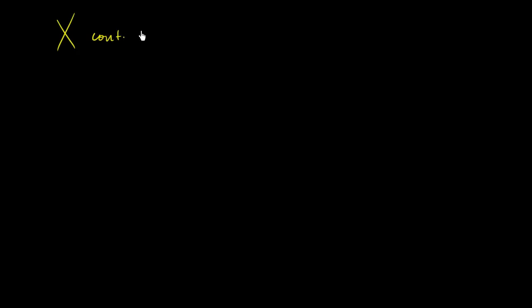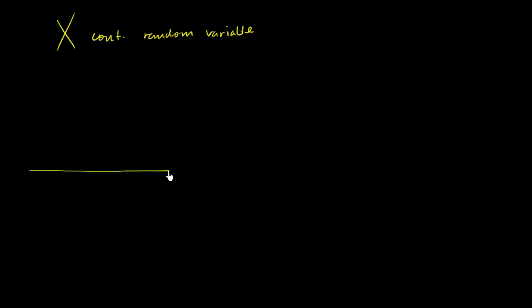Let's say I have some random variable x, and it is a continuous random variable. I want to explore and construct a probability distribution for it. On the horizontal axis are the values that x can take on, and on the vertical axis I'll show the probability density for each of those values. We'll discover in a few moments why we're calling it density.